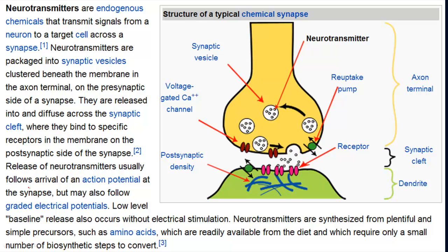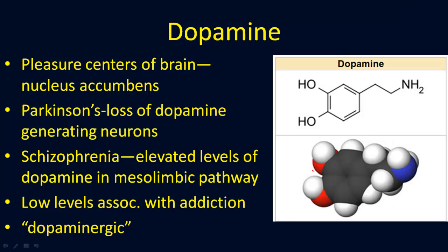This is a quick screen capture from Wikipedia, and it shows you the basic structure of the end of a neuron. You've got the synaptic section with the synaptic bulbs and the vesicles. The vesicles hold the neurotransmitters, which are released into the synapse. And then you've got the receptor sites over on the postsynaptic neuron.